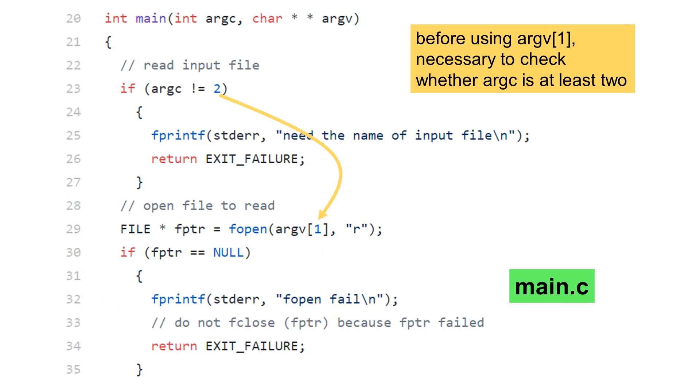At the very beginning, the function checks whether argc is at least 2. The reason is that we need to use argv[1] as the input file name. As explained earlier, argc is at least 1 because argv[0] is the name of the program.